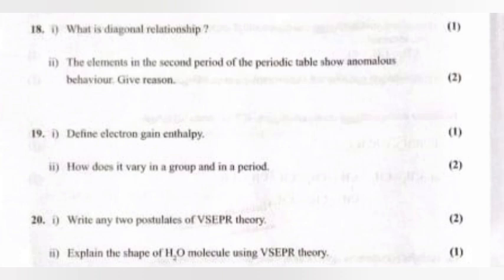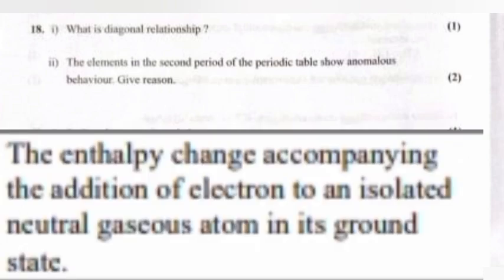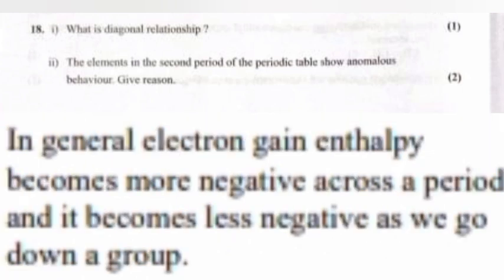Question 19: 1. Define electron gain enthalpy. 2. How does it vary in a group and in a period? Answer: 1. The enthalpy change accompanying the addition of electron to an isolated neutral gaseous atom in its ground state. 2. In general, electron gain enthalpy becomes more negative across a period and it becomes less negative as we go down a group.